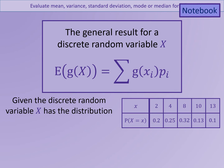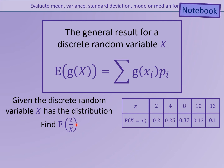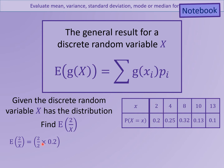For example, we have a discrete random variable here with the following distribution. You can see we have the X values along the top and the probabilities of these X's occurring here. If we wanted to find the expected value that 2 over X could take — in other words, what is the mean value of 2 over whatever X is — we could do this by taking 2 over X for each of the X's and multiplying by the probability.